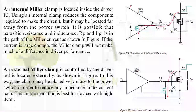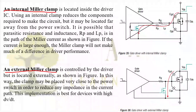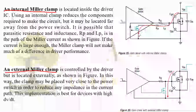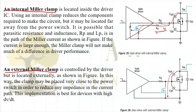Whether to use an internal or external miller clamp depends entirely on the application requirements. To minimize parasitic effects, the gate driver IC or external clamp switch should be placed as close as possible to the main active switch. This ensures the Rp and Lp effects are minimized and the circuit operates effectively.